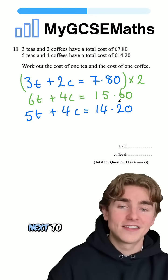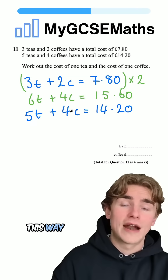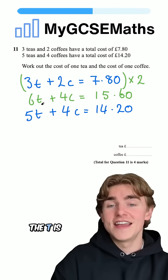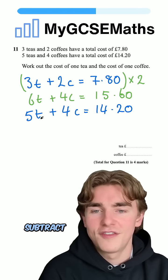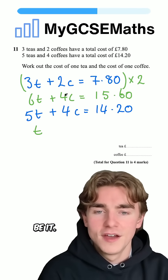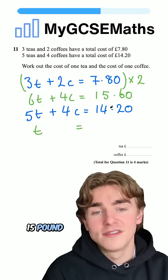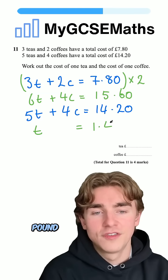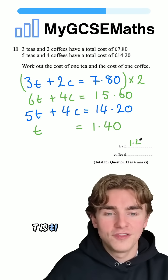Now that we have a match next to our c's, we can subtract our second equation from our first. And I'm going to do it this way around just because the value of the t is higher on the top equation. So we're going to do 6t subtract 5t is going to be 1t. 4c subtract 4c is going to be zero, so they're going to cancel each other out. Fifteen pound 60 take fourteen pound 20 is going to be one pound 40. Now we have the value of t. We know that our t is one pound 40.